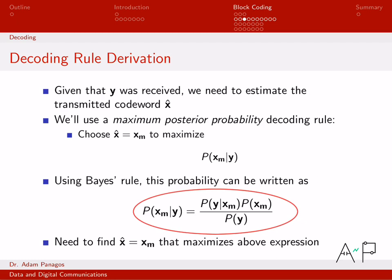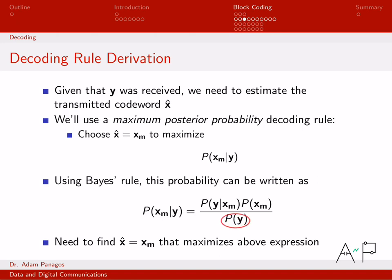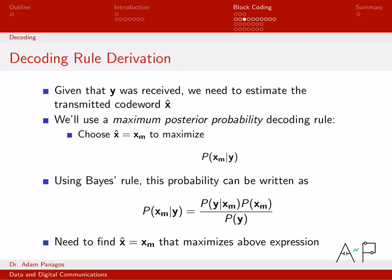We can rewrite this rule using Bayes' theorem as: the probability of observing Y given codeword XM was sent, times the probability of sending codeword XM, divided by the probability of making that observation P(Y). Going from the original form to this form is a pure application of Bayes' rule. We'll now work on this equivalent form term by term to see how this overall quantity simplifies and determine our estimate for which codeword was transmitted.